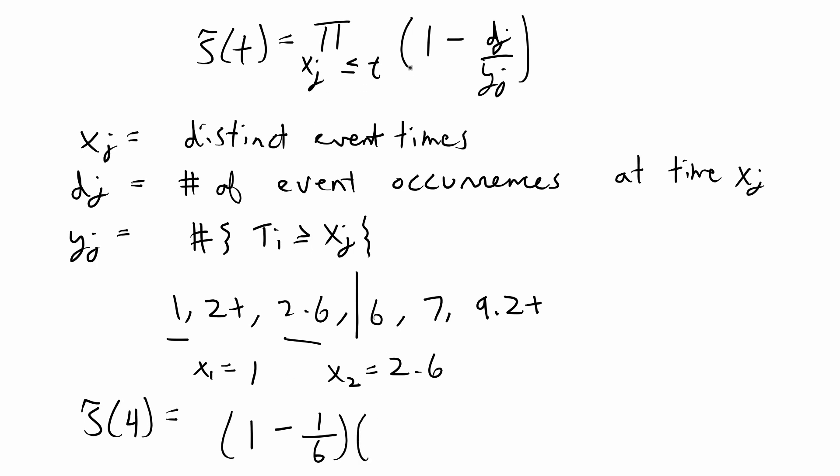Then for x of 2 we're going to have 1 minus d of j. The number of event occurrences at x of 2 is just 1, and then the number of follow-up times is going to be 1, 2, 3, 4. So this is all we have to calculate for s of 4.